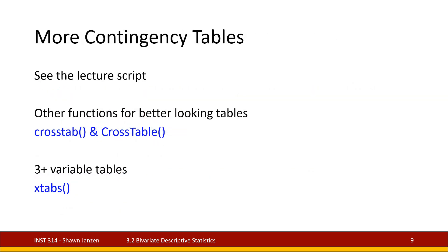There are other functions beyond table that do similar things with more information and different structure — you might want to explore cross_tab and cross_table. But table is the only one you really need at this point and it gets the job done. If you want to model multivariate tables with three or more variables, check out the function xtabs — but be warned, xtabs can get out of hand quickly. If you pump in too many variables, your tables can get too large and the output won't look very good.